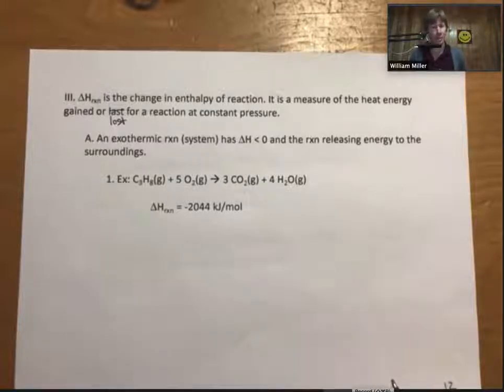And an exothermic reaction, or system, to use the phrase that we've started to use, has delta H less than zero. I put just delta H there because we'll see a couple different subscripts as we go through this chapter, for which all, when they are less than zero, the reaction is exothermic. And an exothermic reaction has the reaction releasing energy to the surroundings.